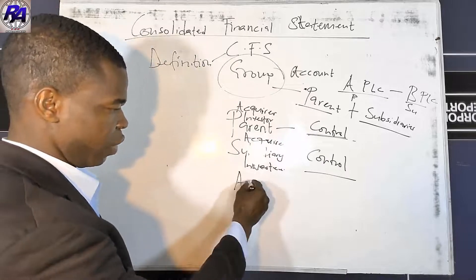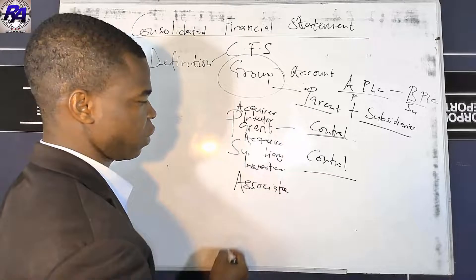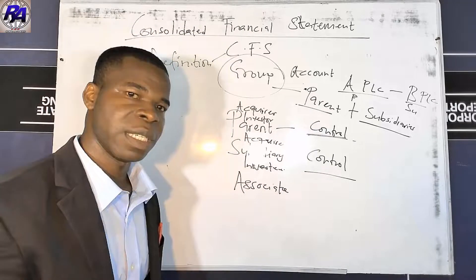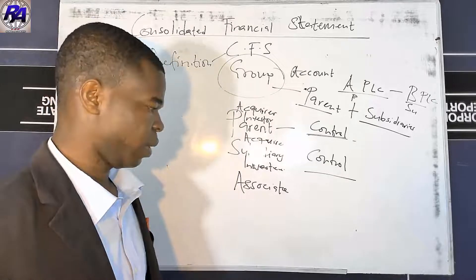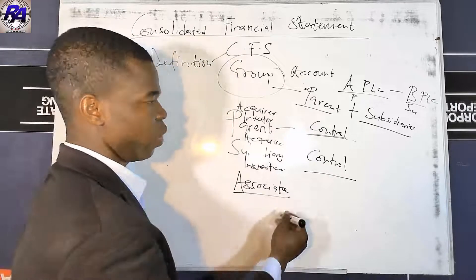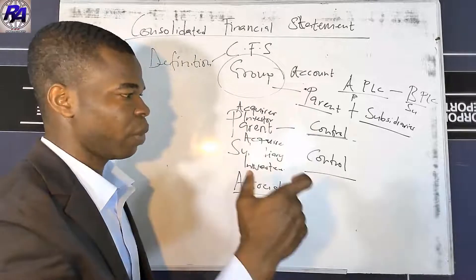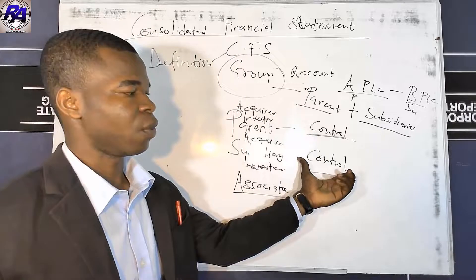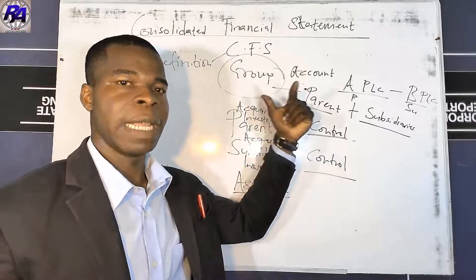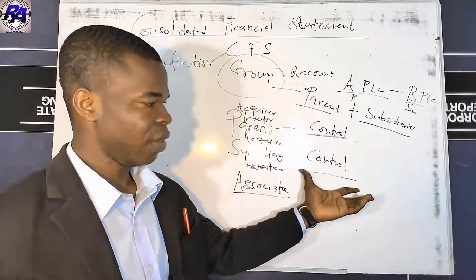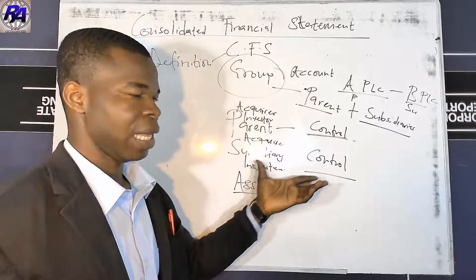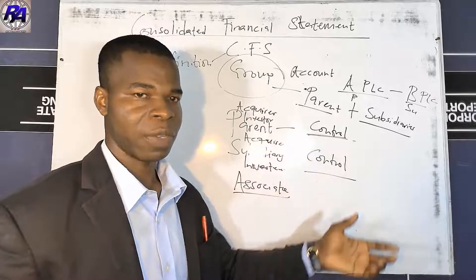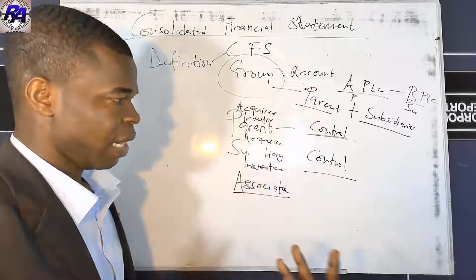The entity being acquired is mostly referred to as the subsidiary or the acquiree. Now let's look at what an associate is. When we talk about an associate — as mentioned under IAS 28, accounting for investment in associates — an associate is an entity over which another entity has obtained significant influence. If the entity does not obtain control but obtains significant influence, then the entity being acquired is called an associate, not a subsidiary.